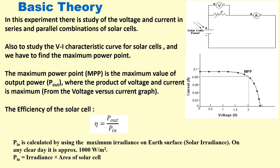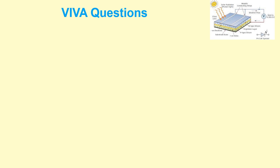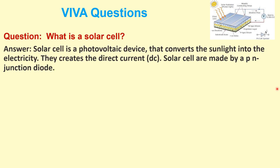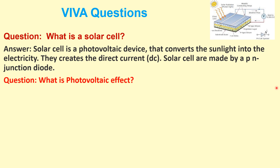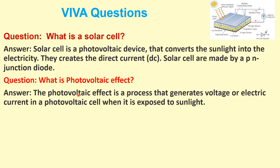What is a solar cell? A solar cell is a photovoltaic device that converts sunlight into electricity and creates direct current. Solar cells are made of a PN junction diode.